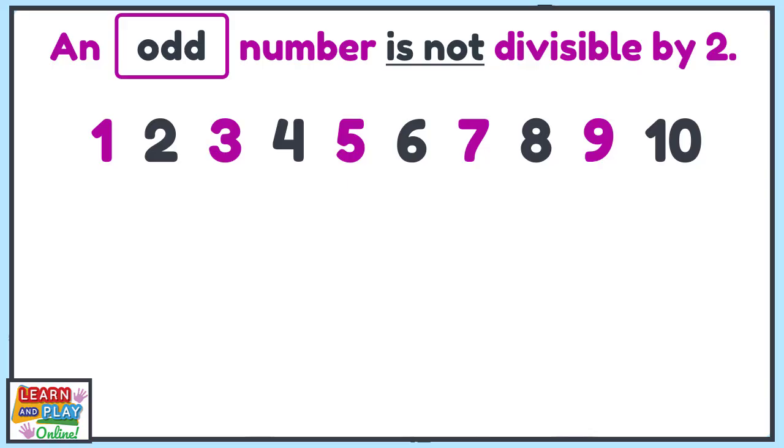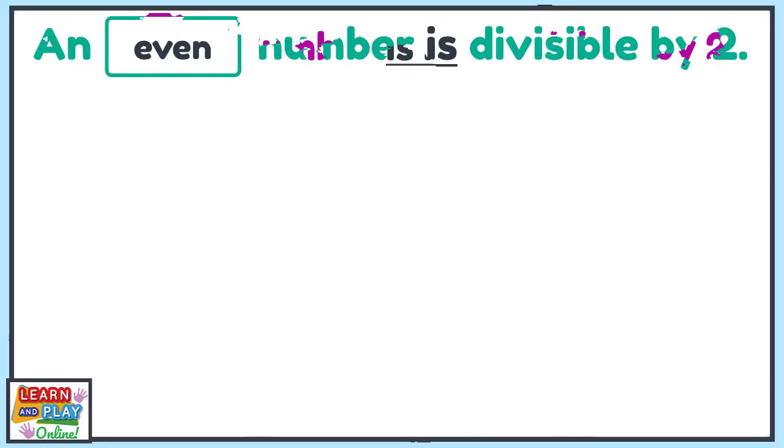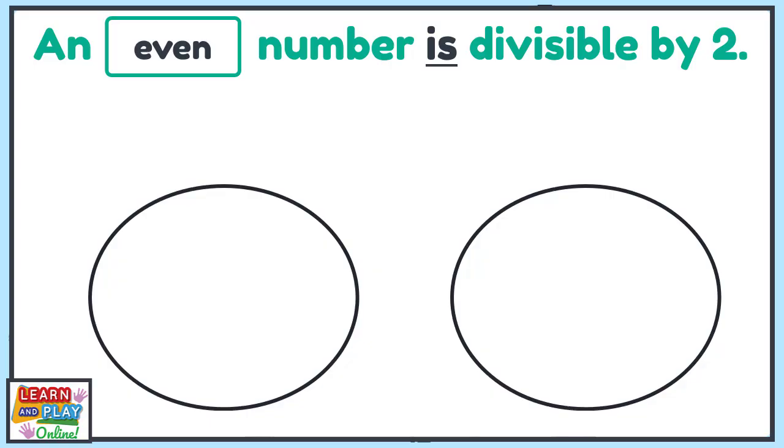Now let's move on to even numbers. Do you remember what an even number is? An even number is a number that is divisible by 2. That simply means that even numbers can be shared equally into 2 groups. To investigate this, we need to share collections of objects into 2 groups again.